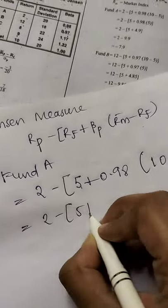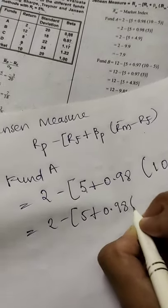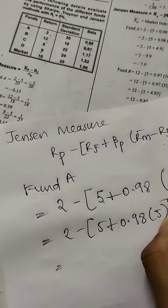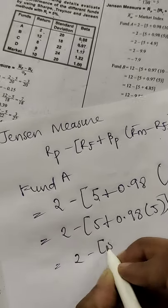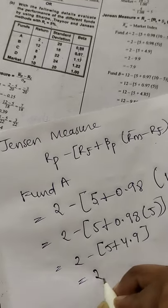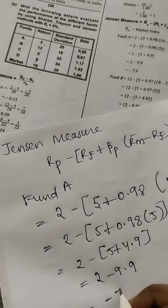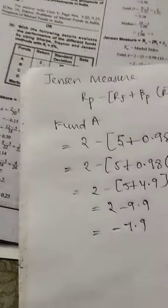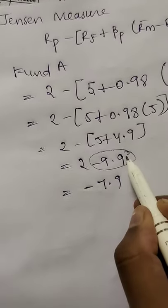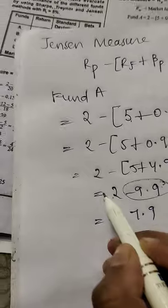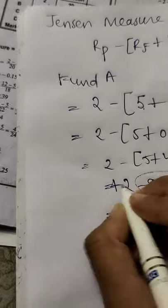So here after calculation we get 2 minus 5 plus 0.98 into 5. 2 minus 5 plus 4.9, which we get is 2 minus 9.9, which is minus 7.9. Why minus? Because minus 9.9 is greater than 2, so plus of minus is minus. Because of that we get minus 7.9.